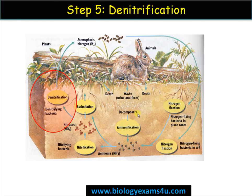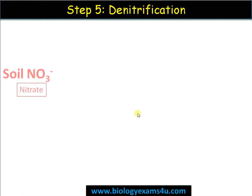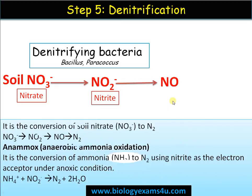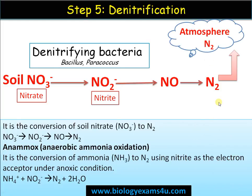The fifth step is denitrification. Soil nitrate, by the action of denitrifying bacteria, is converted to nitrite, then to NO, and finally to N2 or dinitrogen, which is released into the atmosphere — completing the cycle. Denitrification is the return of N2 to the atmosphere by denitrifying bacteria in genera such as Bacillus and Paracoccus. There is also anaerobic ammonia oxidation — the conversion of ammonia to nitrogen using NO2 as an electron acceptor in anaerobic conditions, occurring in deep bottom regions of lakes.